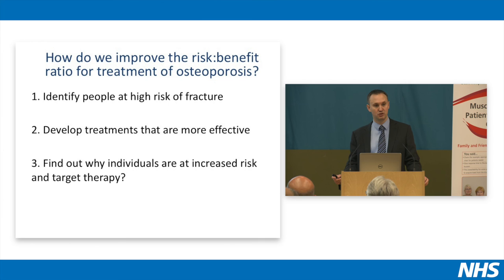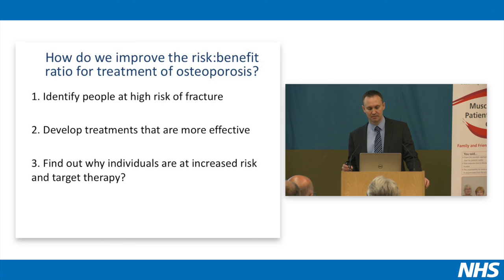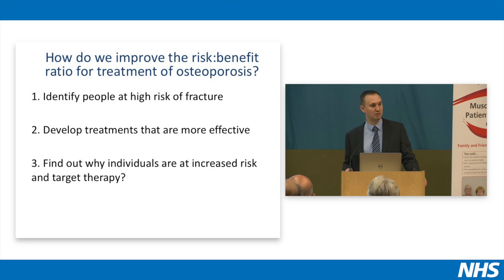It's also important that if we can identify treatments that work even better, we'll have greater benefits. At the moment bisphosphonates approximately halve the risk of fracture, but if we bring in drugs that reduce the risk by 60% or 70%, that's going to be more beneficial in terms of risk-benefit. Lastly, we've started to look at whether people with certain diseases have specific abnormalities in their bone, and if so, whether we could target our treatments to that specific area.